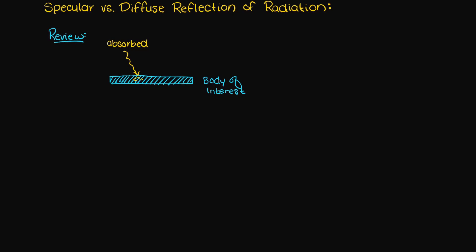When radiation hits a surface it can either be absorbed by the body, transmitted through the body, or reflected off of the body. The reflection portion will be the focus of this video.